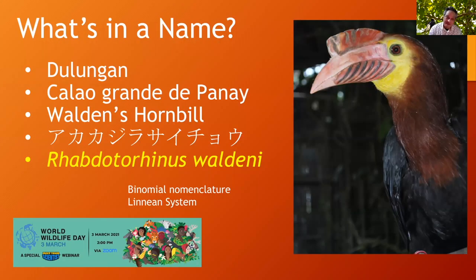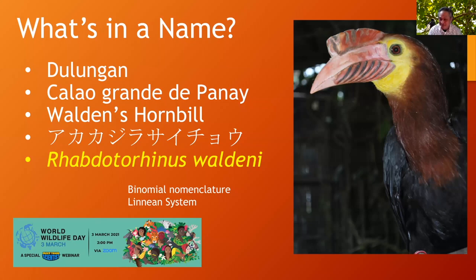Going back to my topic — the Dulungan and what's in the name. This is my take on about 500 years of the Philippines. Dulungan being the old name, then Calao Grande de Panay when the Spanish arrived. Then the Americans arrived and gave it the English name Walden's Hornbill. Then the Japanese occupation, hence the Japanese name I cannot pronounce. But you have to bind them all together because in the later age, science is represented by the scientific name Rhabdotorinus Waldenai.